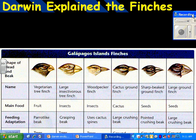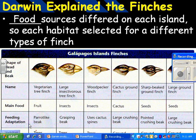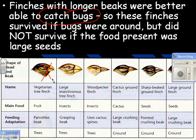Here's how Darwin explained the finches. Food sources differed on each island, so each habitat selected for a different type of finch. Finches with longer beaks were better able to catch bugs, so these survived where bugs were plentiful but did not survive where the food present was large seeds — they were outcompeted by the other finches. On an island with all kinds of bugs, the short-beaked ones would die because their beak isn't good for catching bugs. The long-beaked ones would do great. It's not that one is better than the other — each is better in its own environment.